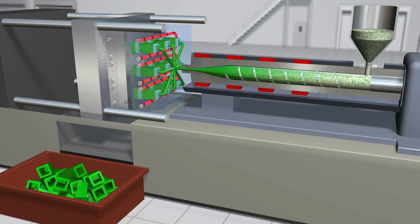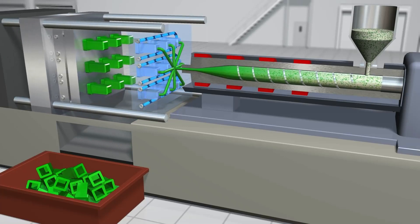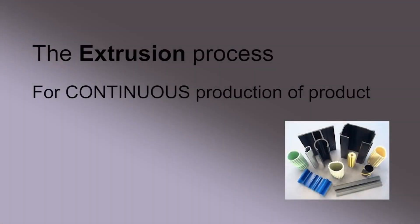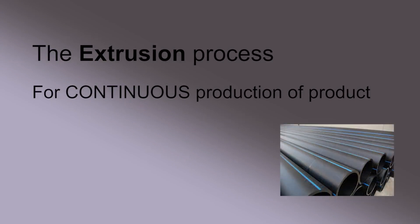Molding cycles can last anywhere from one second for tiny parts made in tiny molding machines to minutes for large parts made in presses the size of a building. Extrusion processes use the same plastic melting operation as injection molding, but there is no mold and the resin compressing screw rotates constantly and product is created continuously.